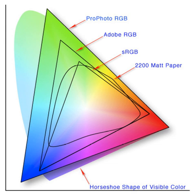For example, Adobe RGB and sRGB are two different absolute color spaces, both based on the RGB color model.